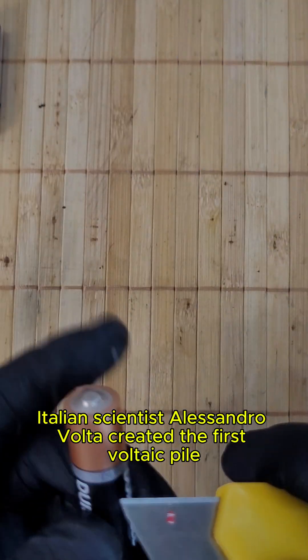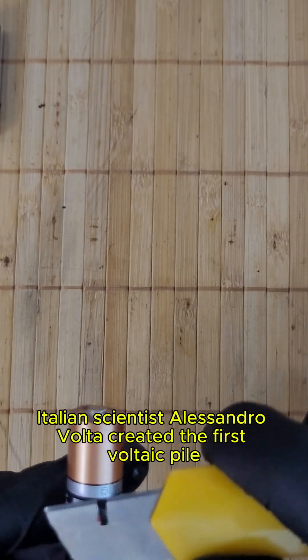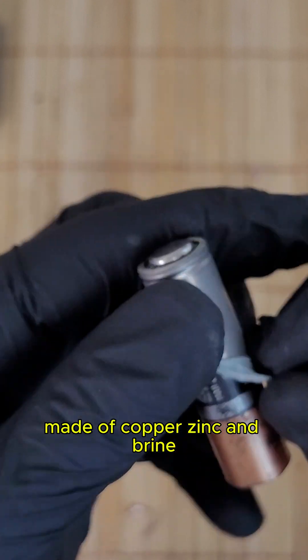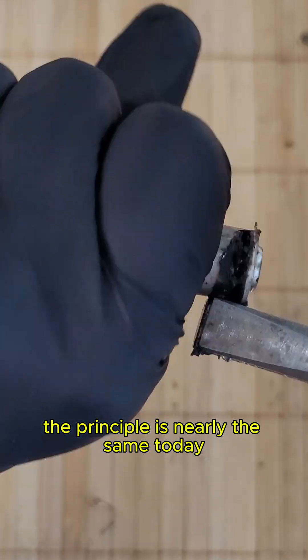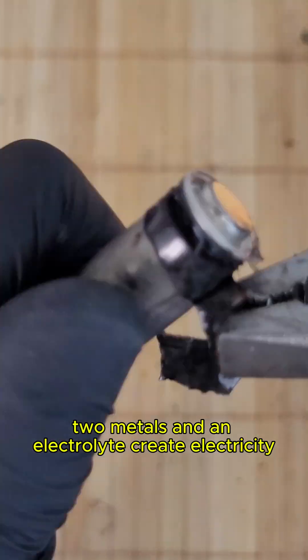Italian scientist Alessandro Volta created the first voltaic pile made of copper, zinc, and brine. The principle is nearly the same today. Two metals and an electrolyte create electricity.